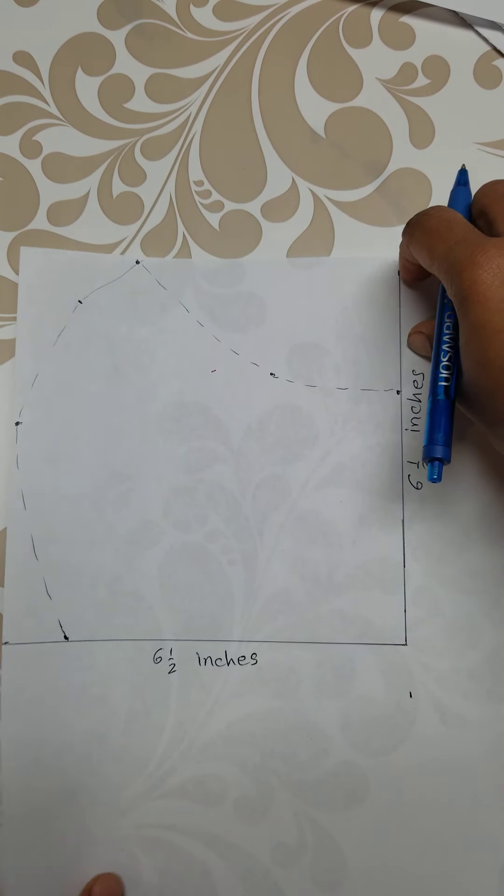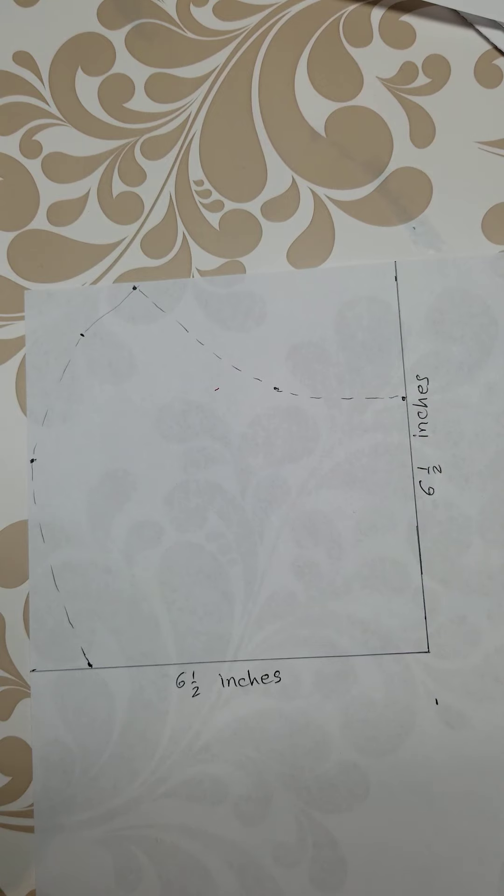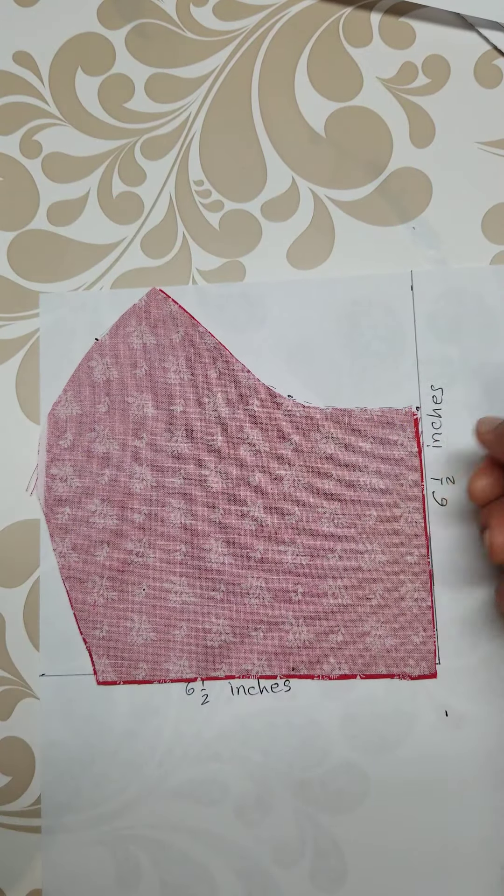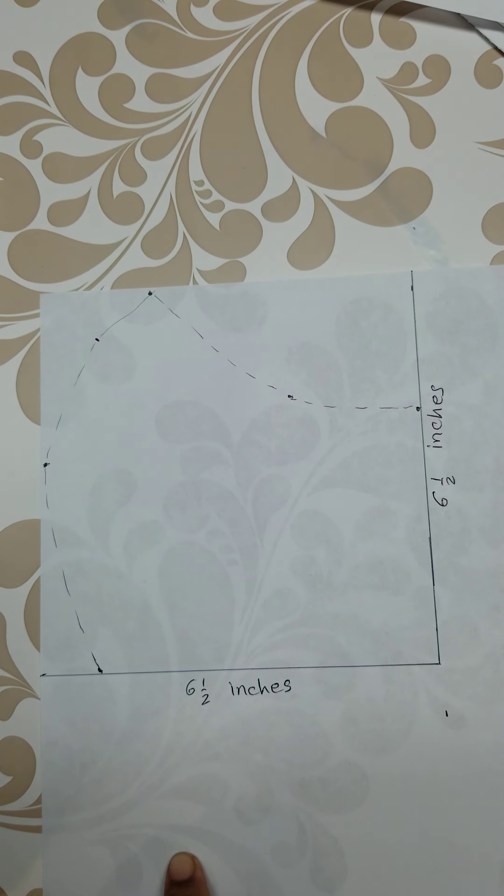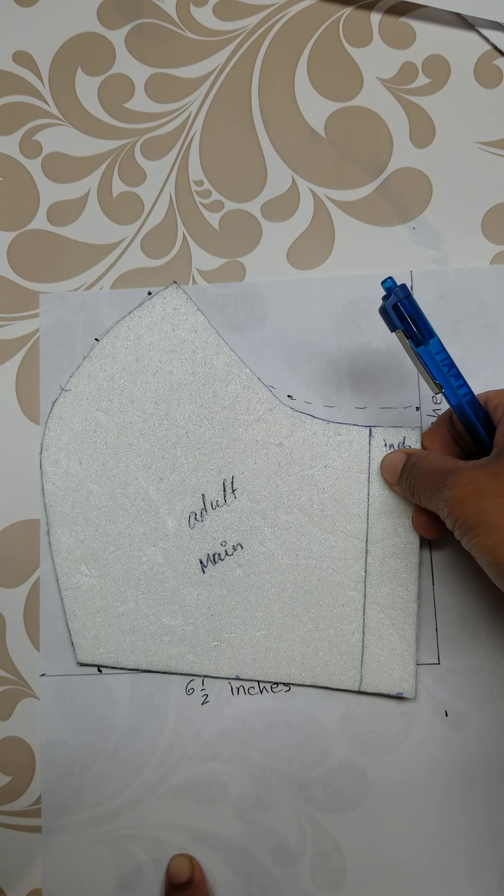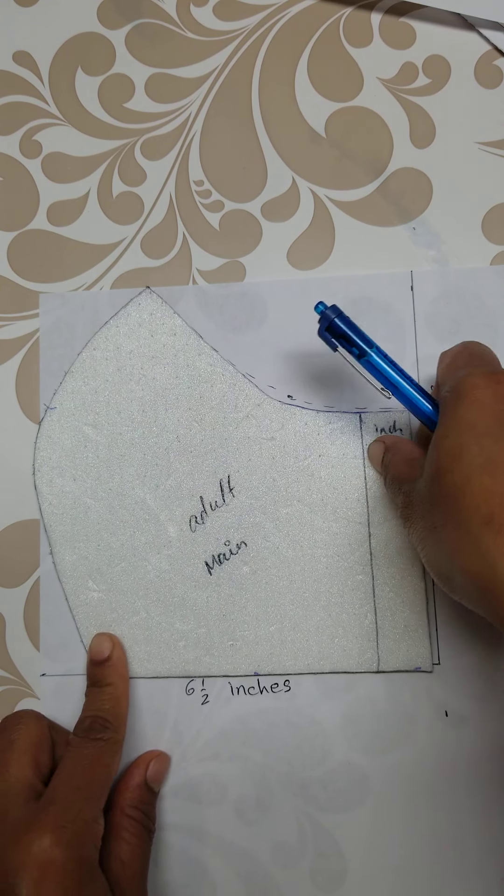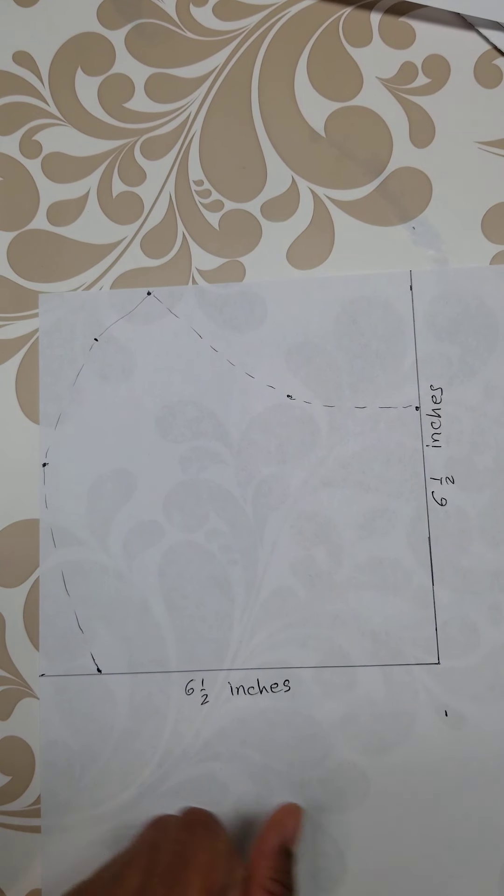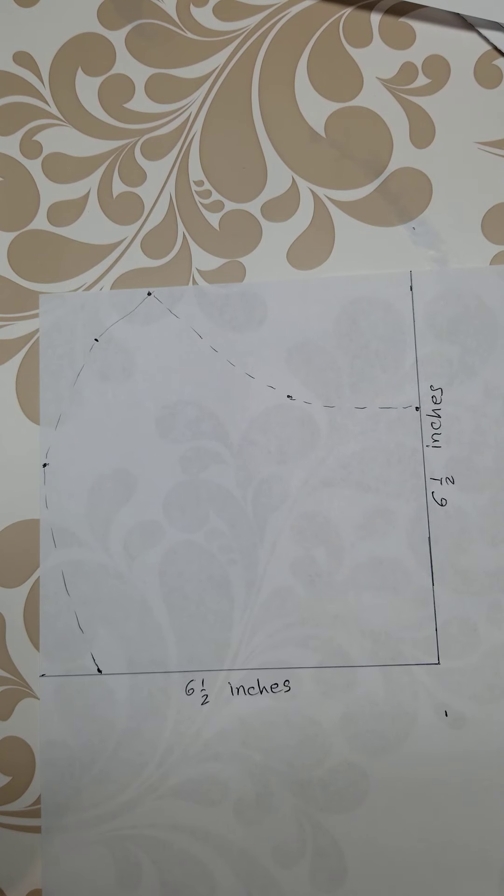This is how the pattern looks like. I can show you again, the pattern on my fabric. See here? This is the main one. You need to make two pieces of this main fabric or pattern.